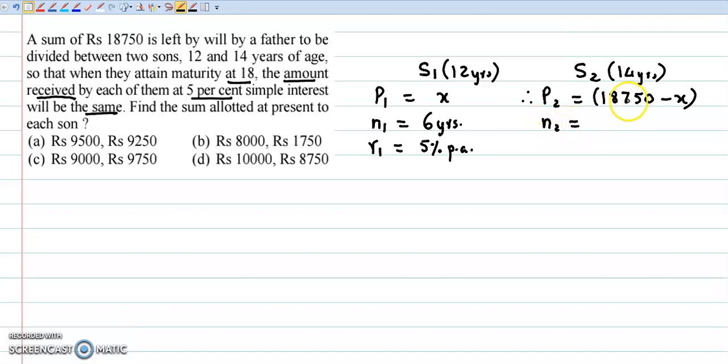Now the first son has to wait 6 years to be 18 years, time period is 6 years. Second son 18 minus 14, that is 4 years.